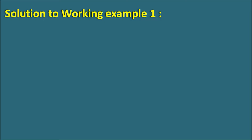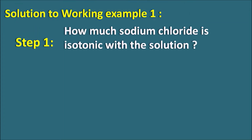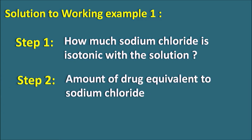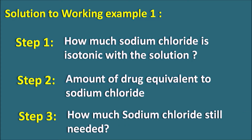To solve this problem, let us divide the solution into three steps. Step 1: how much Sodium Chloride is isotonic with the solution for the given volume? Step 2: the amount of drug equivalent to Sodium Chloride — we calculate the equivalent amount of Sodium Chloride already represented by the drug. Step 3: the final step, where we calculate how much Sodium Chloride is still needed to produce isotonicity.